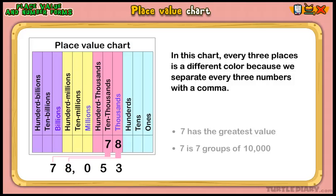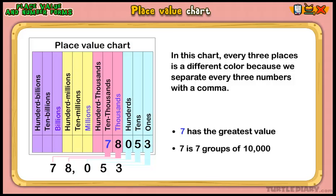The 8 is in the 1,000s place, 0 is in the 100s place, 5 is in the 10s place, and 3 is in the 1s place. The number with the greatest value is 7 because it is in the 10,000s place. It refers to 7 groups of 10,000.